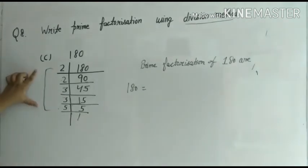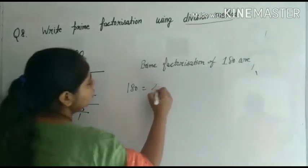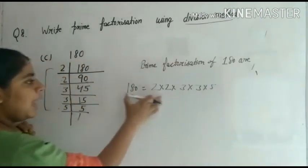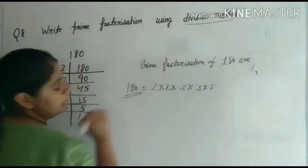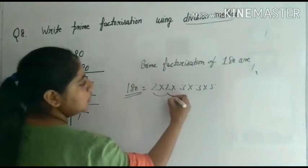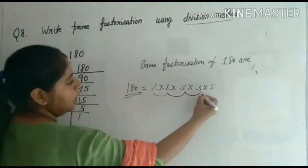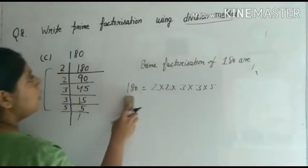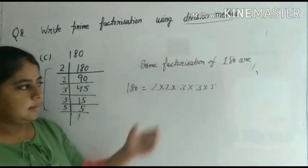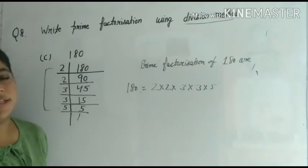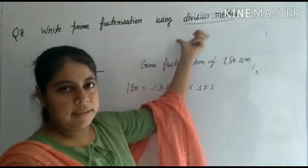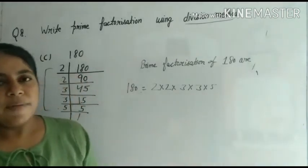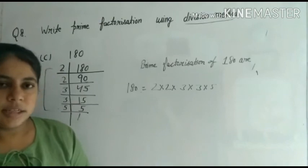The numbers that appear on the side — those we divided by — those are the factors: 2 × 2 × 3 × 3 × 5. If you multiply them back, you get 180 again. Today, children, what did we learn? Prime factorization using the division method. Try these questions. And in the next class we will do the tree factorization method to find prime factorization. Thank you, children.